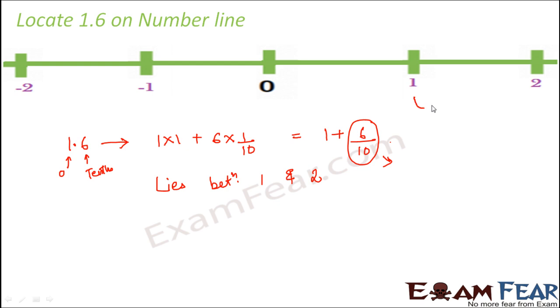That means somewhere here, somewhere in between 1 and 2. So how do we know where exactly it lies? Now remember how we denoted fractions on number line, we focused on the denominator. So here the denominator is 10. So we divide each unit into 10 equal parts. This is how we divide the region between 1 and 2 into 10 equal parts. And this says that 1.6 is 1 plus 6 by 10.